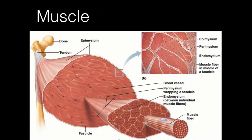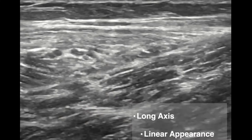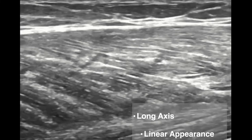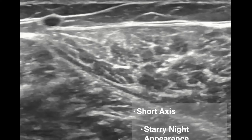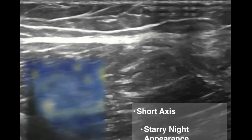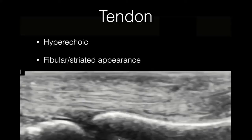Muscles look very different on ultrasound — they kind of look like a nice steak. The muscle fibers are wrapped together to form bundles, which are all wrapped together to make a bigger body. It has a very coarse, linear texture. In long axis you'll see a fibrous appearance — it looks like a nice steak you're going to toss on the grill. In the short axis it has kind of a van Gogh Starry Night appearance — a cross-section of a nicely marbled steak with that starry night-type look.